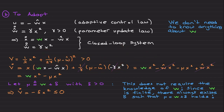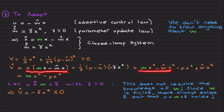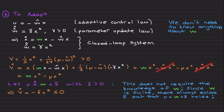You can see that the γ in the parameter update law and the (1/γ) in the Lyapunov function cancel — that is exactly why you always place (1/γ) in the second term when constructing adaptive Lyapunov functions. Expanding the remaining terms and canceling, you end up with wx² - μx². You can pause the video to review the highlighted steps.